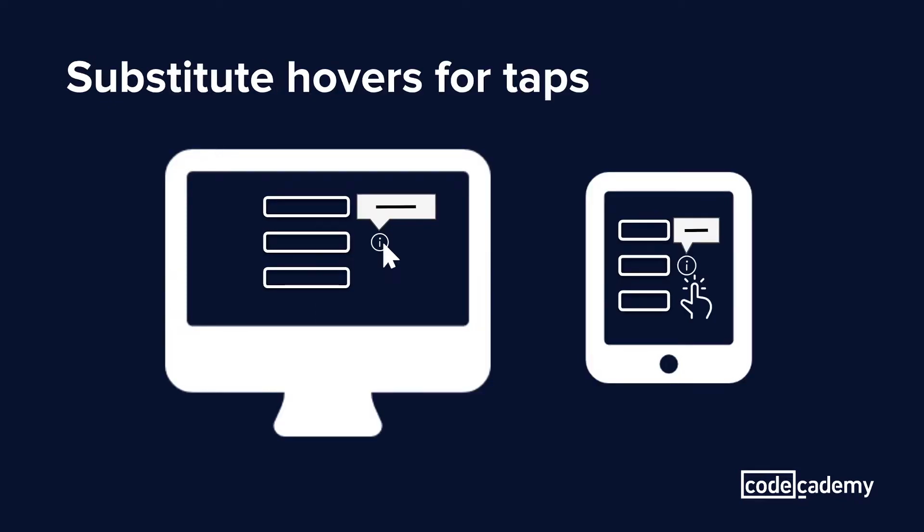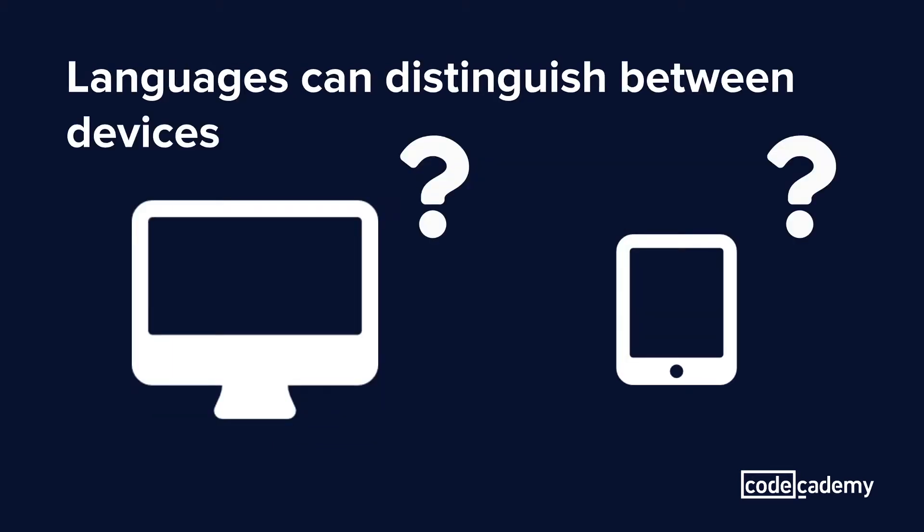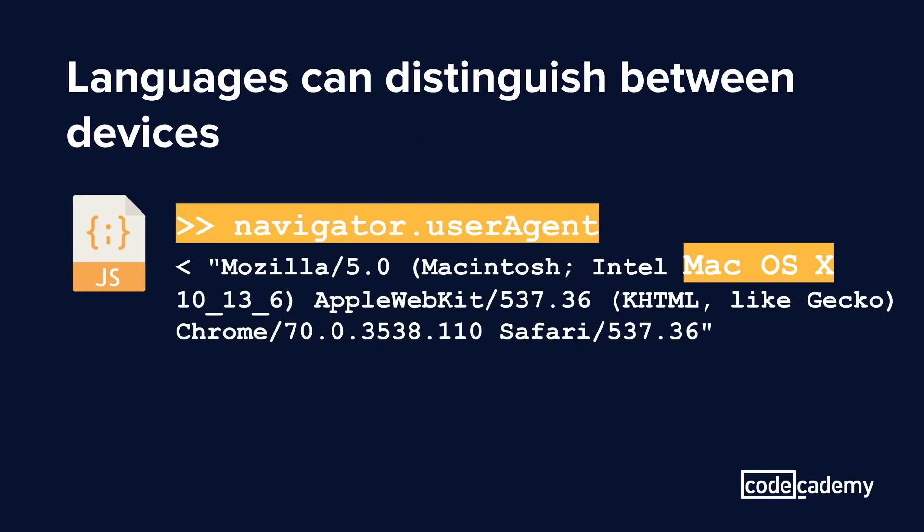For example, if a tooltip appears when the user hovers over an icon on a desktop, the mobile version could have the icon be tappable, and then the tooltip would appear. But how are you supposed to know if you're on a mobile device or a desktop device? Well, don't worry — most languages have some kind of support that can determine if your user's accessing your application on a mobile or desktop device.